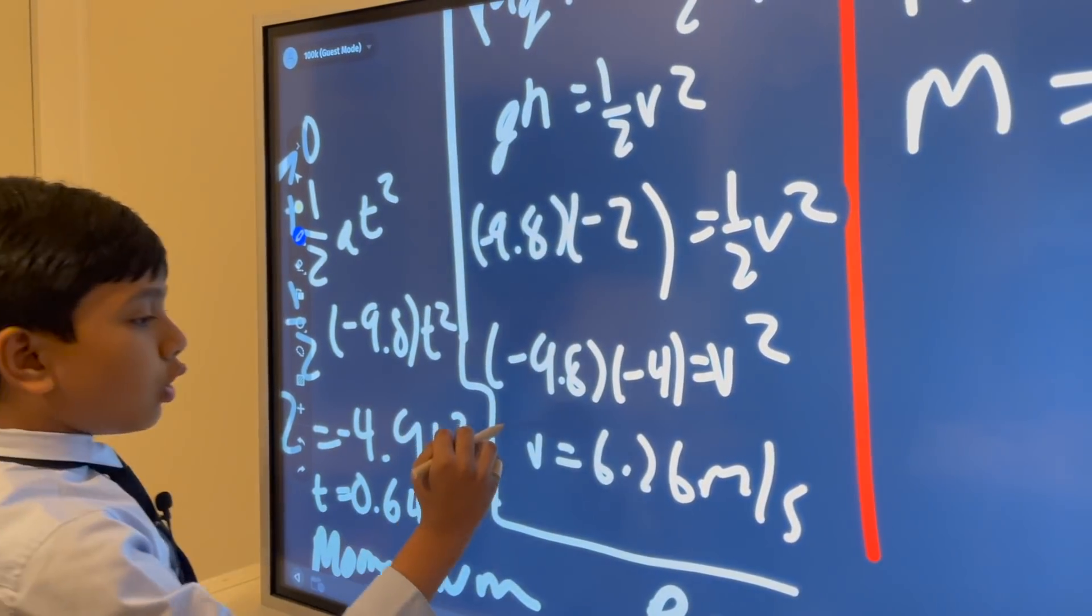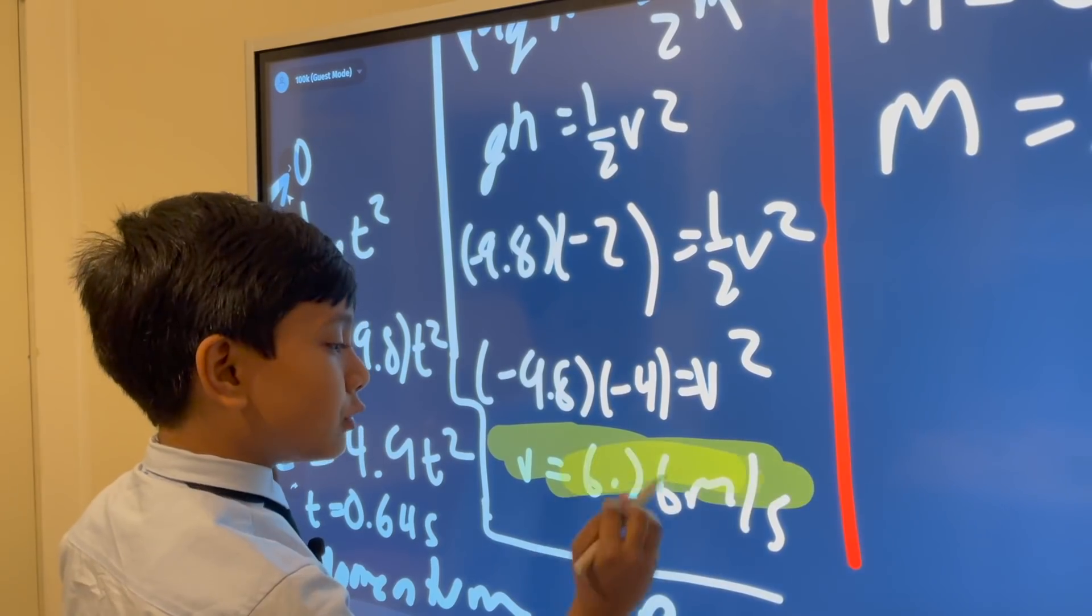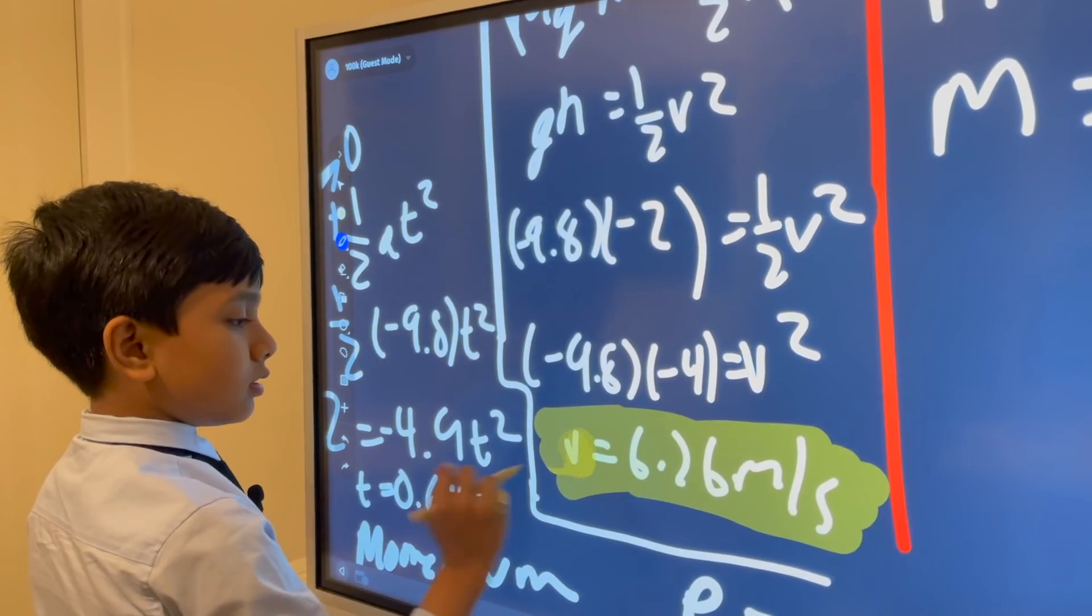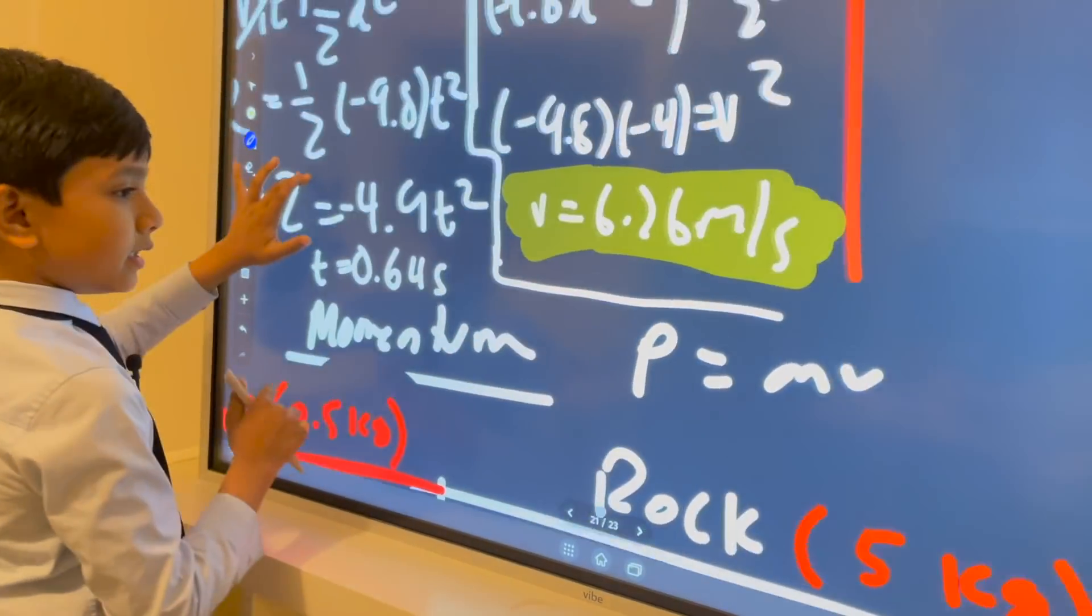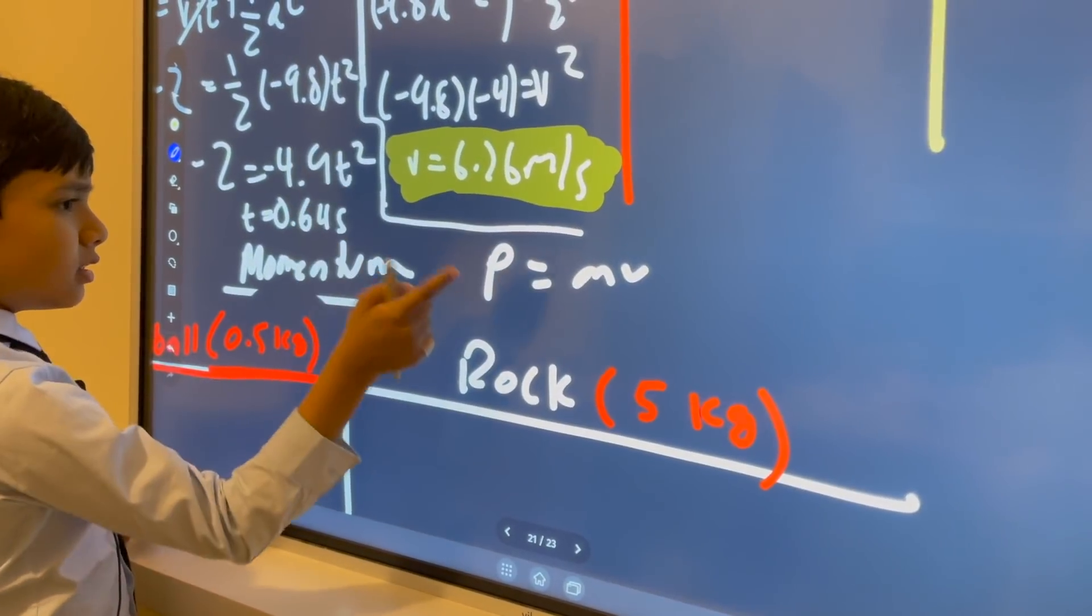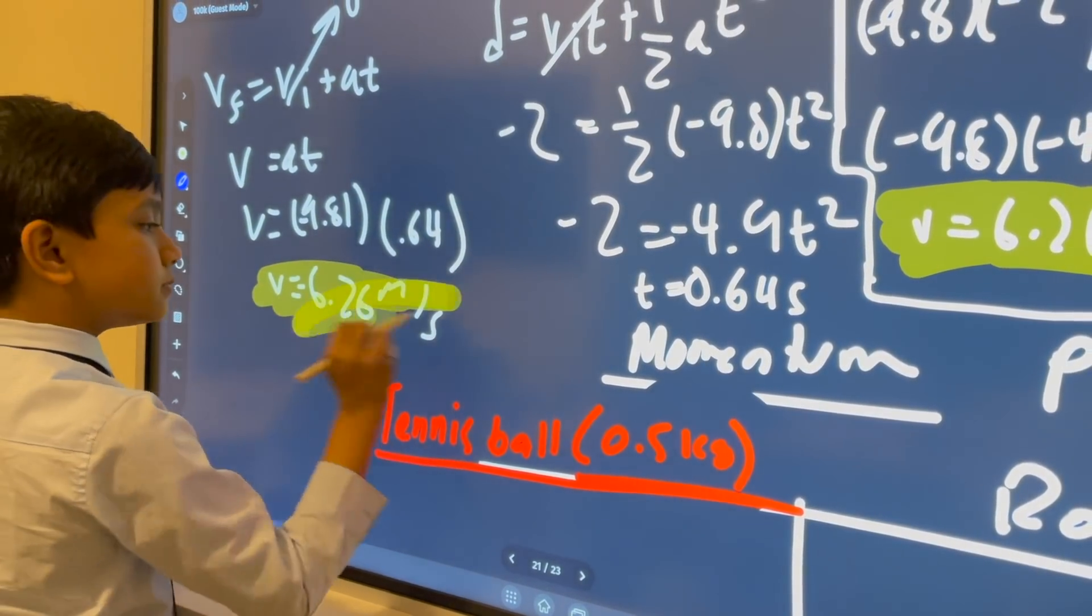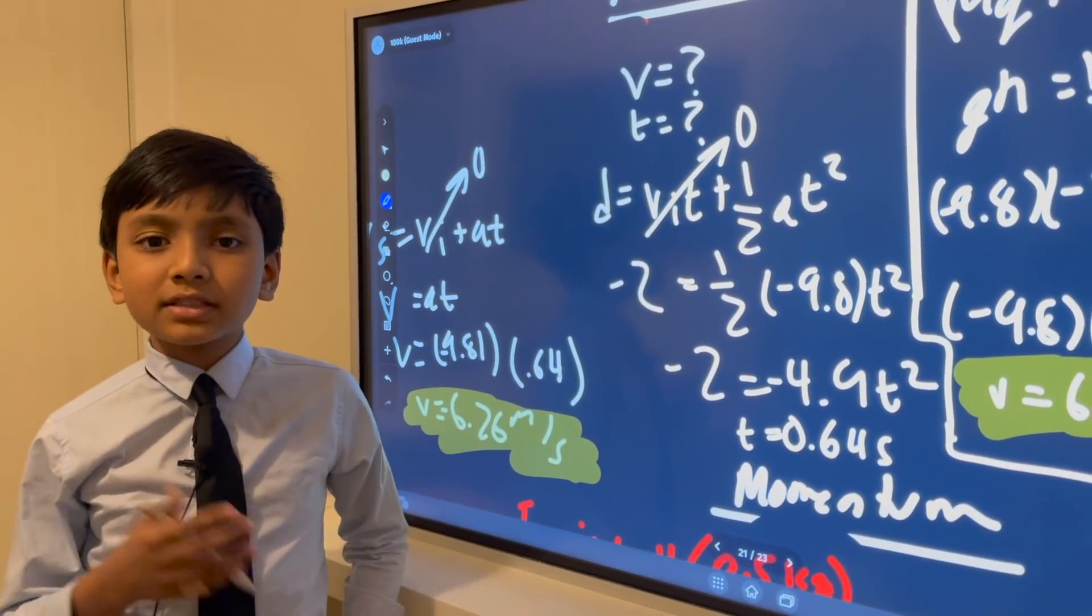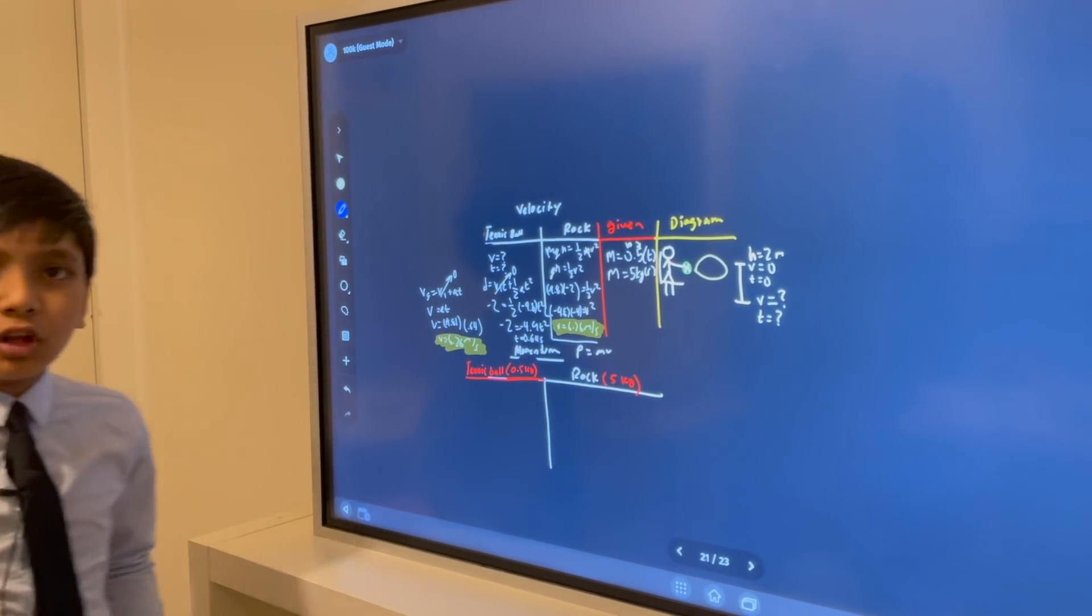After you do all the math and you use the calculator on your computer, because I know you will, instead of actually doing the decimal math by hand, then you get v equals six point two six meters per second, which you may notice is actually the exact same thing that was in our first tennis ball. Interesting, right? This is because mass has nothing to do with velocity. So they fell with the same velocity.